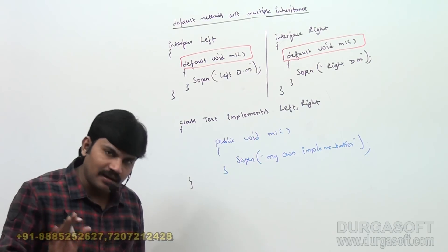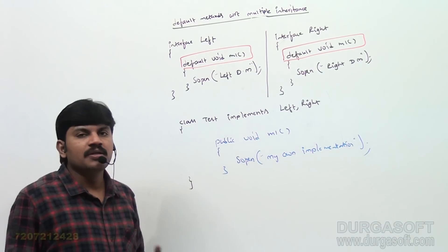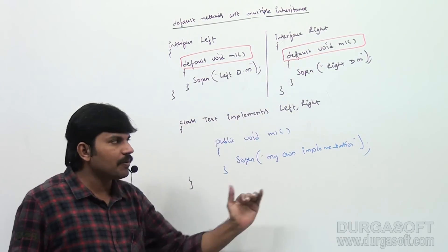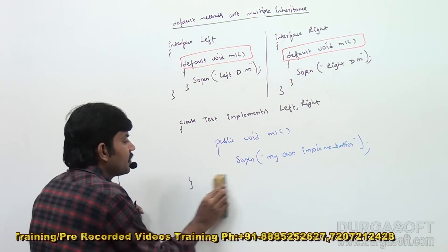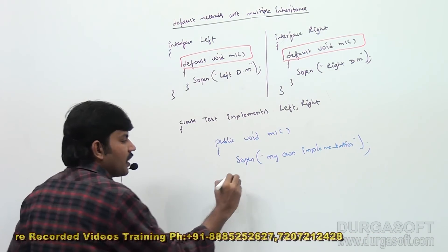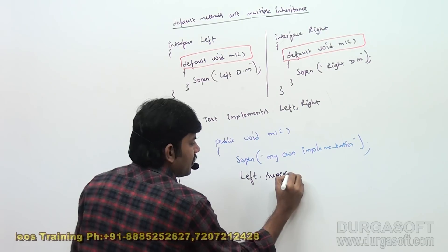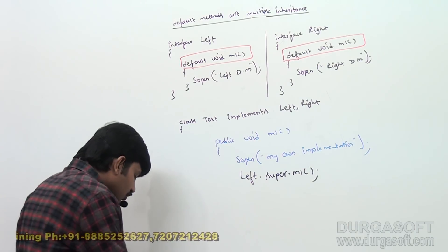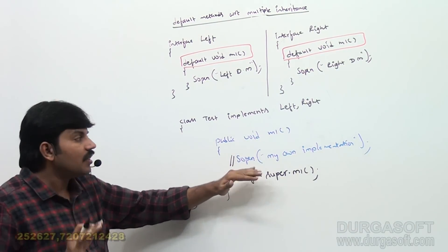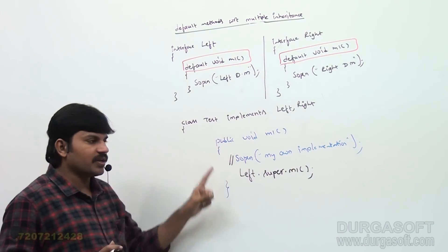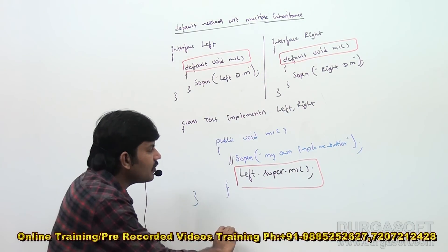This is one way. But there is another possibility. If for the Test class I don't want to provide a new implementation — if I want only the Left implementation or the Right implementation — whatever implementation you require, you are allowed to specify. If I want the Left interface method, I write `Left.super.m1()`. So instead of providing a new implementation, you call the desired interface's default method using `InterfaceName.super.m1()`.